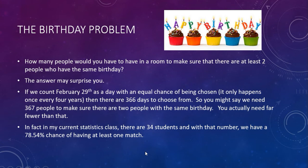And then there's the birthday problem. How many people would you have to have in a room to make sure there are at least two people who share the same birthday? The answer may surprise you. If we count February 29th as a day with an equal chance of being chosen — it's not, since it only happens once every four years, but let's count it — that gives us 366 days to choose from. You might say we need 367 people to guarantee a shared birthday, but you actually need far fewer than that. In my current statistics class there are 34 students, and with that number we have a 78.54% chance of having at least one match.